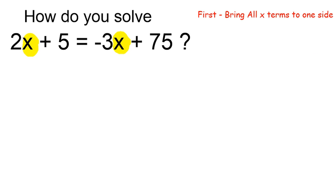The first thing I would do to solve this is get rid of this minus 3x by adding 3x, and of course if I do it to one side, I have to do it to the other side.